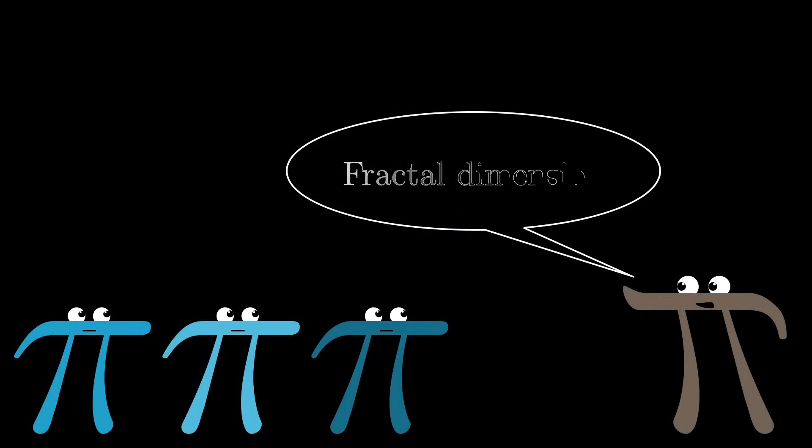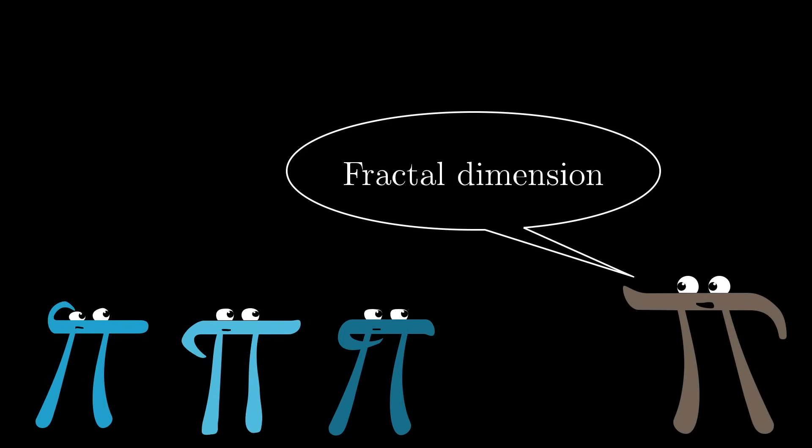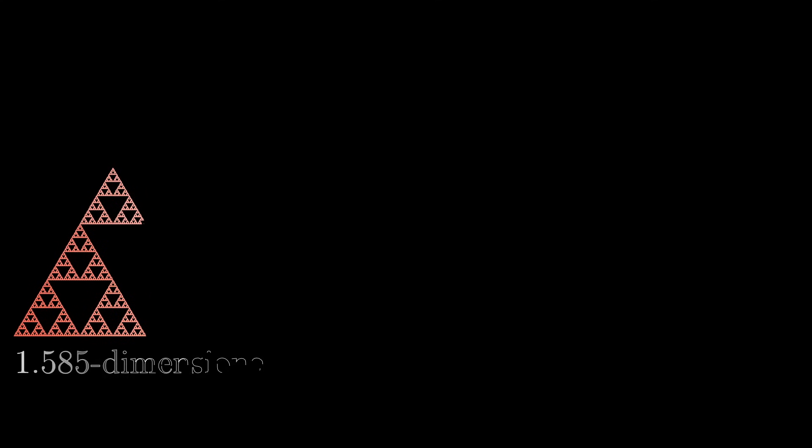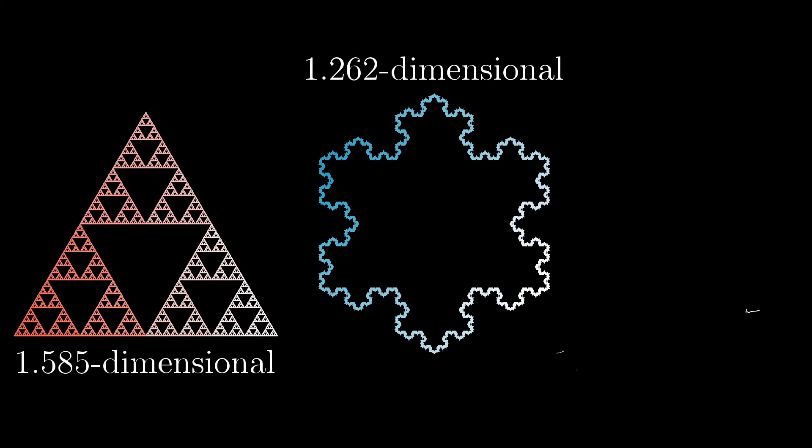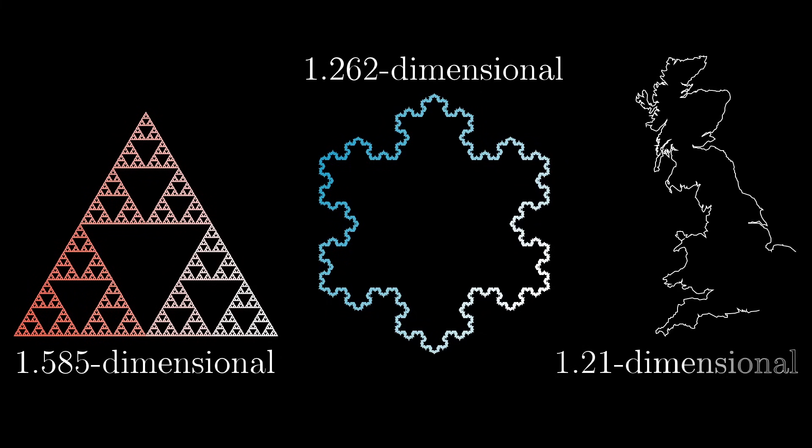The real definition of fractals has to do with this idea of fractal dimension, the main topic of this video. You see, there is a sense, a certain way to define the word dimension, in which the Sierpinski triangle is approximately 1.585 dimensional, that the Koch curve is approximately 1.262 dimensional, the coastline of Britain turns out to be around 1.21 dimensional, and in general, it's possible to have shapes whose dimension is any positive real number, not just whole numbers.